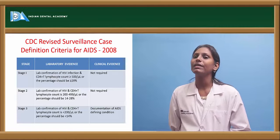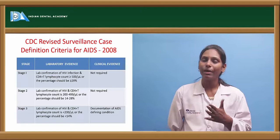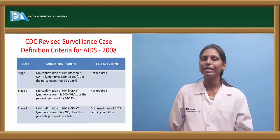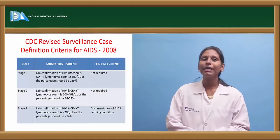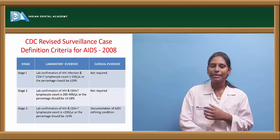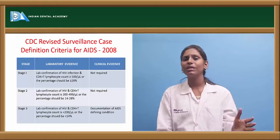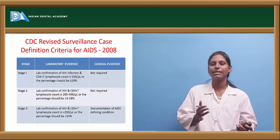In Stage 1, HIV infection must be confirmed by laboratory test, CD4 T-lymphocyte count should be greater than 500 cells/µL, and CD4 percentage greater than 29% — clinical AIDS-defining conditions need not be present. In Stage 2, laboratory confirmation is required with CD4 count between 200–499 cells/µL and CD4 percentage of 14–28%; clinical evidence is not required. In Stage 3, both laboratory evidence (CD4 count less than 200 cells/µL, percentage less than 14%) and clinical documentation of AIDS-defining conditions are required.